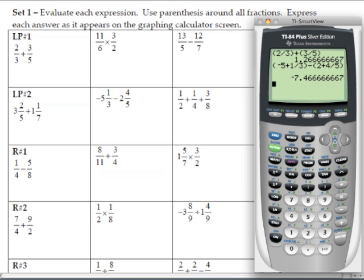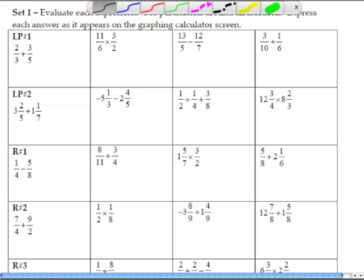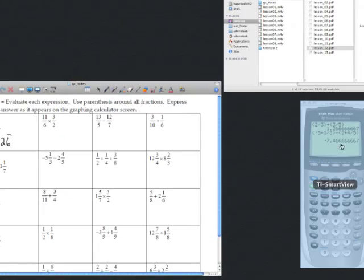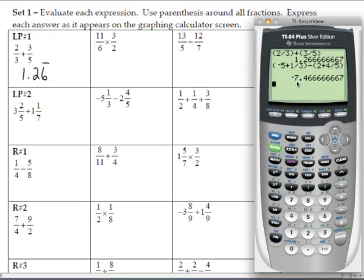So let me write down these answers. Our first one was 1.26 repeating. Let's go back and look at that second answer. And it's negative 7.4 with the 6 repeating.